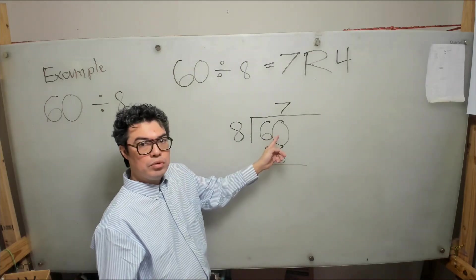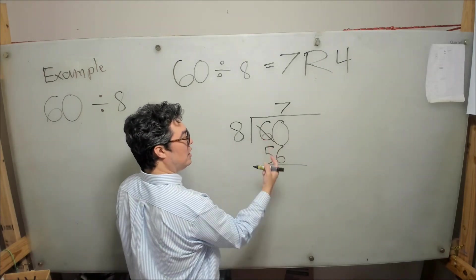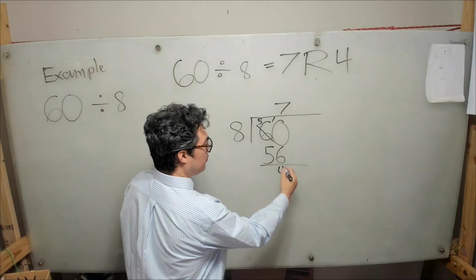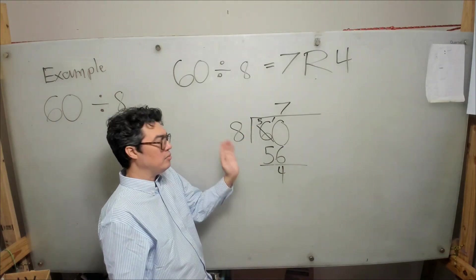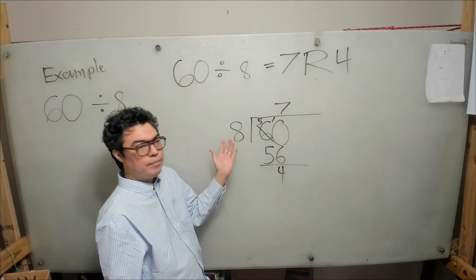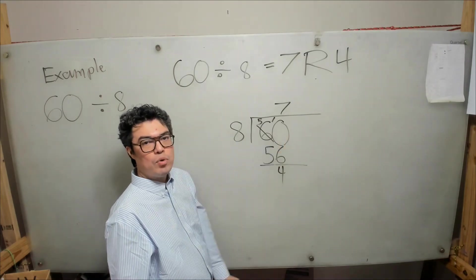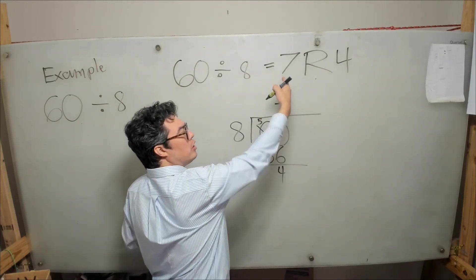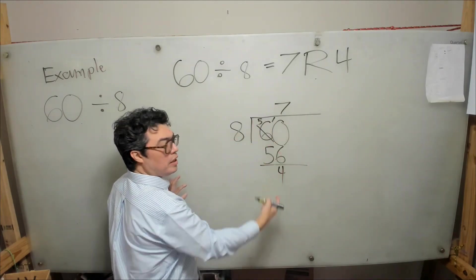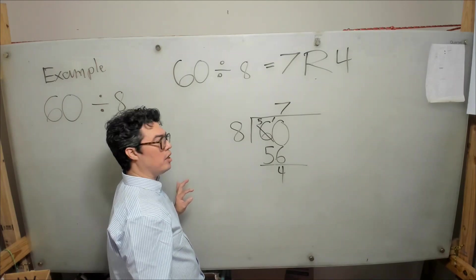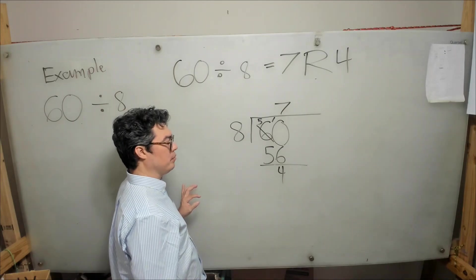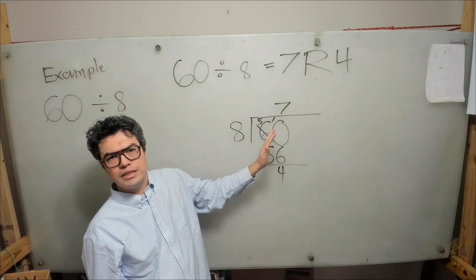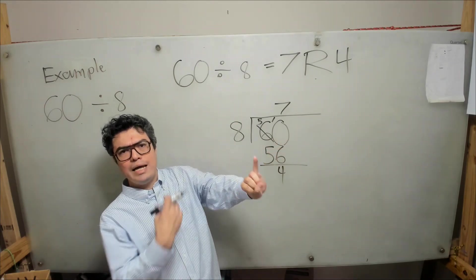7 times 8 equals 56. Now we perform the subtraction: 0 minus 6 — we can't do that, so we borrow from the tens place, leaving 5 tens. 10 minus 6 is 4, and 5 minus 5 is 0. Then I ask: how many times does 8 go into 4? Zero times — 4 is smaller than 8. This gives us the same result: 7 is the quotient and 4 is the remainder.